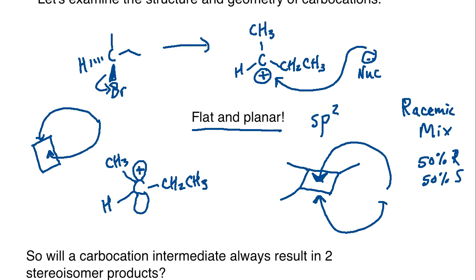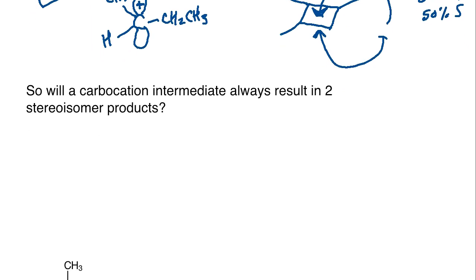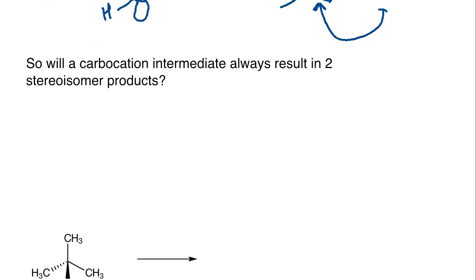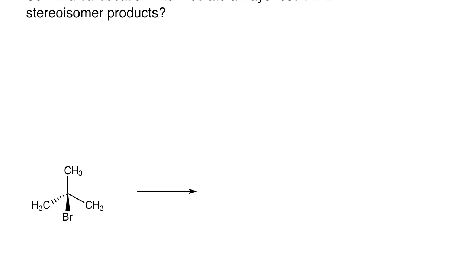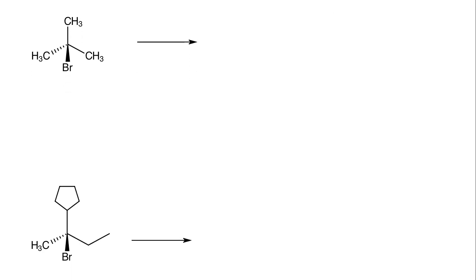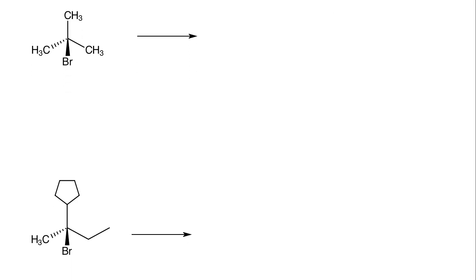So let's take a look. Will a carbocation intermediate always result in two stereoisomer products? Well, I've got two examples here. Let's run both of these examples through SN1 type of reactions and see what the answer is after we finish with that.